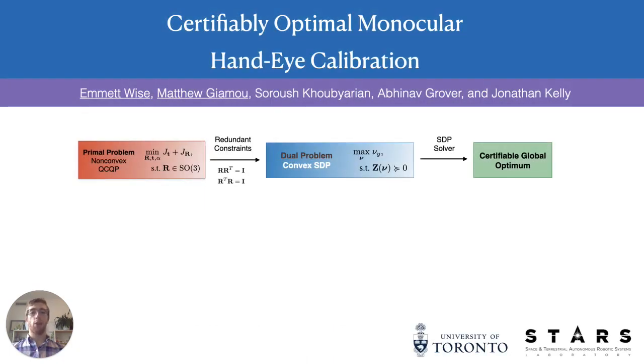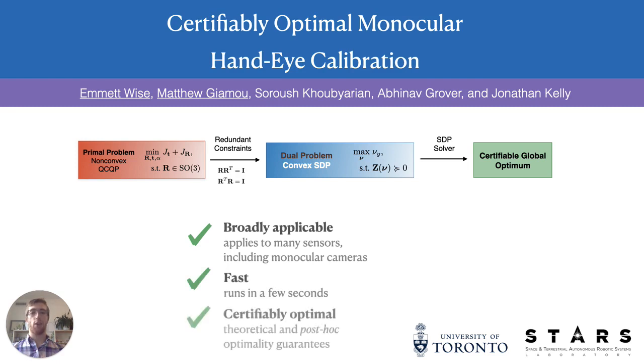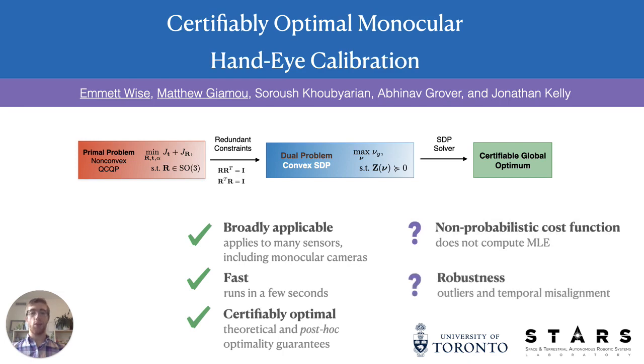In conclusion, we have developed a novel solution to the monocular hand-eye calibration problem. Our method is broadly applicable to a variety of ego-motion-providing sensors, runs quickly on standard hardware, and provides the first certifiable global optimality results for a noisy extrinsic calibration problem. Future work should focus on incorporating probabilistic information into our cost function and leveraging recent tools for robust certifiable perception to mitigate the effect of outlier measurements and temporal misalignment. My co-authors and I thank you for your attention and hope you enjoyed this video and our paper. Please check out our GitHub repository for a freely available Python implementation of our algorithm and experiments.